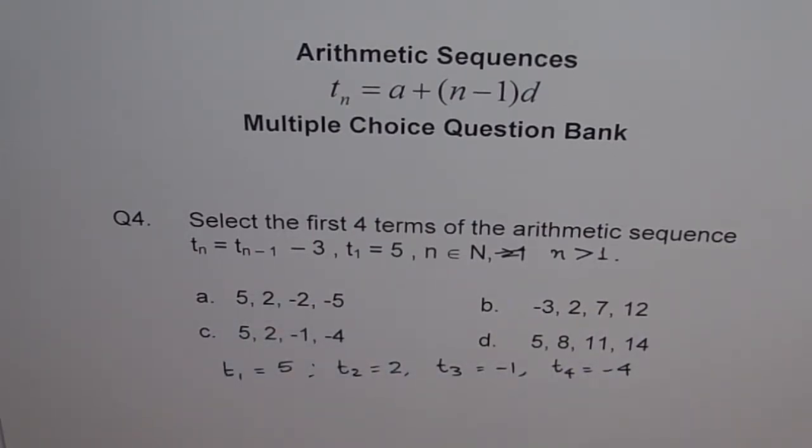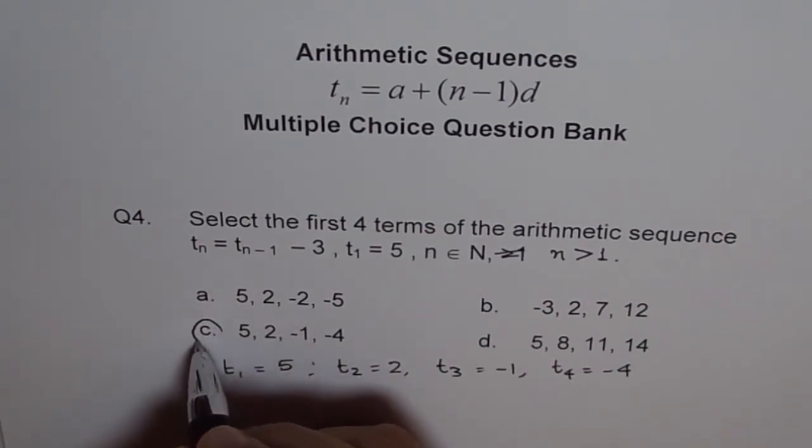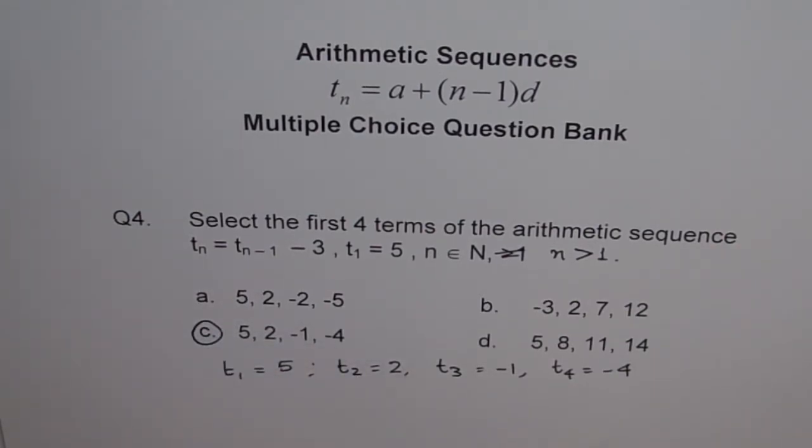In any multiple choice question, my suggestion is, write down your sequence and then match the answer. So you got 5, 2, minus 1, minus 4. 5, 2, minus 1, minus 4. That's our answer. This is the best way and the fastest way to select the right answer from multiple choice questions. I hope you understand that. Thank you.